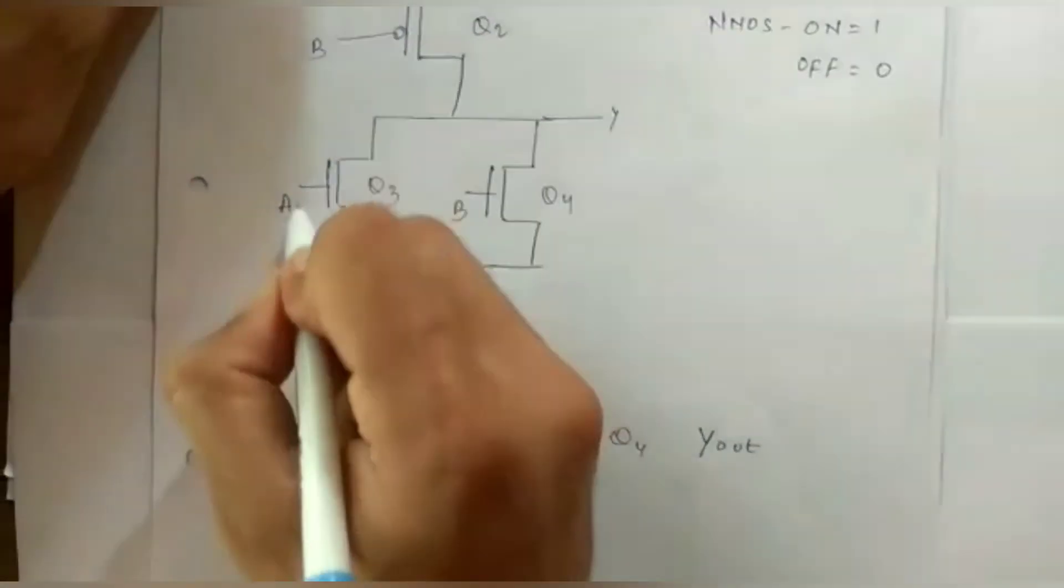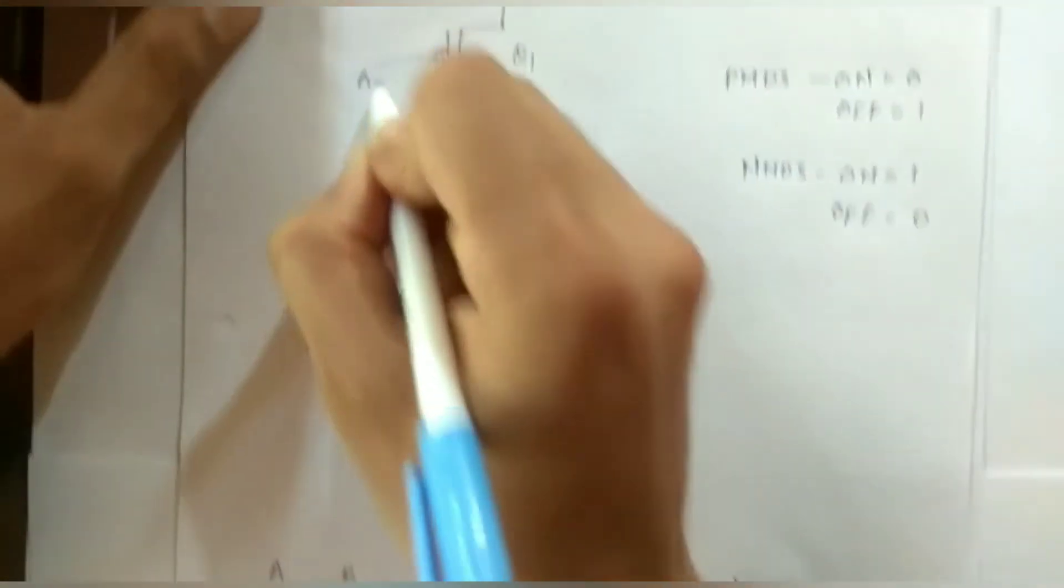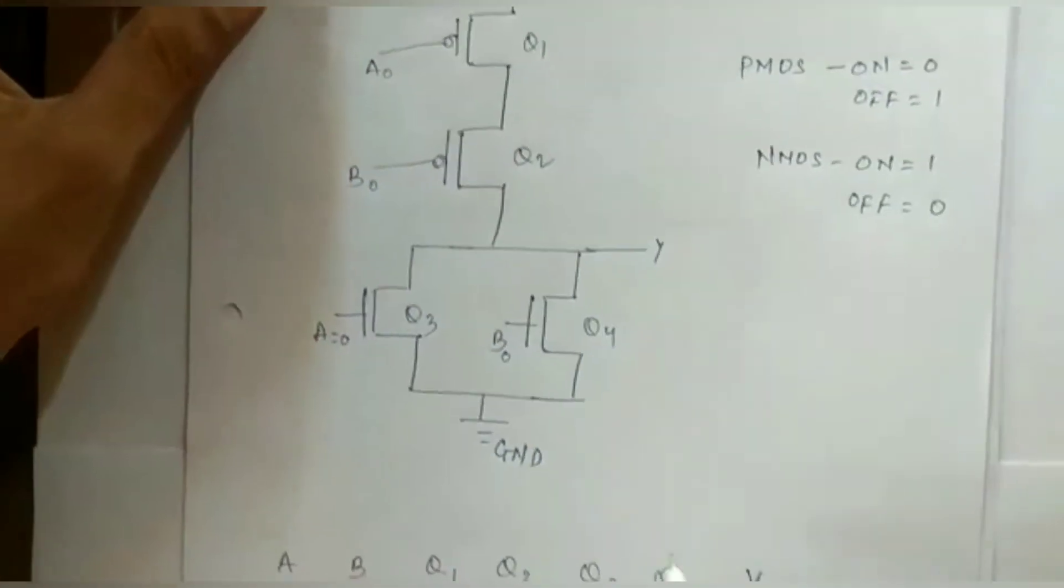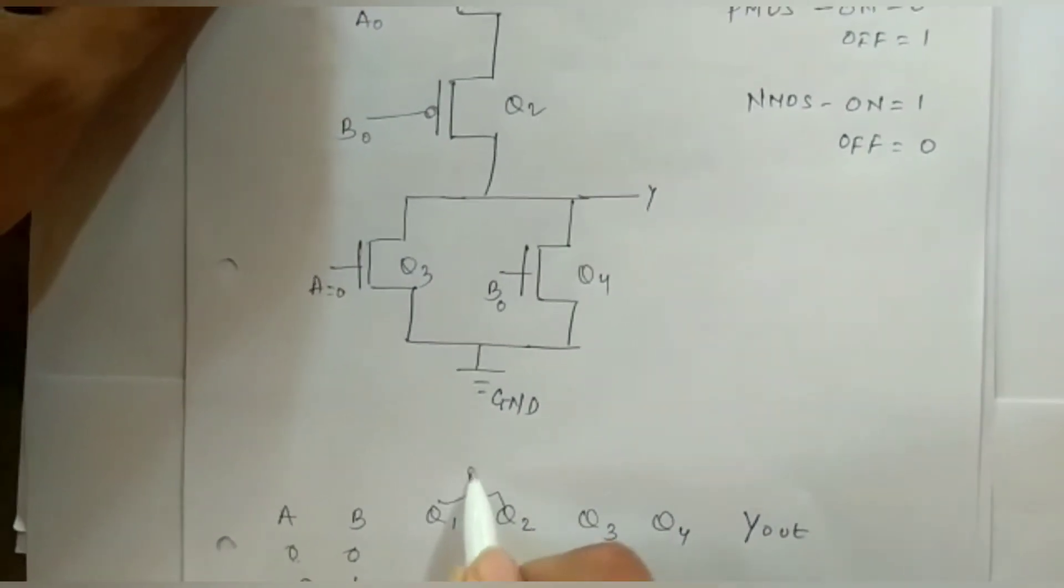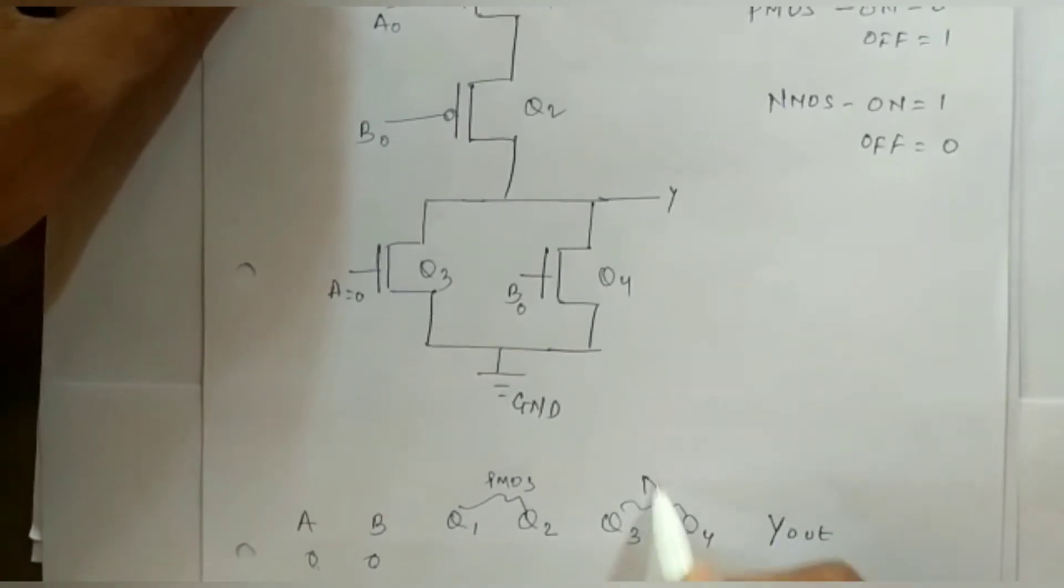For the first expression 00, A is 0, B is also 0. This A is also 0, this B is also 0. This Q1 and Q2 is for PMOS and this Q3 and Q4 is for NMOS.